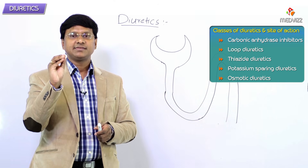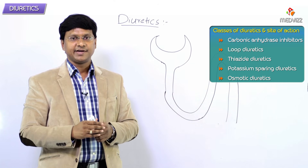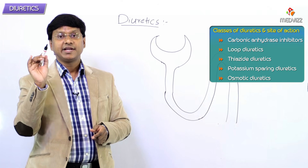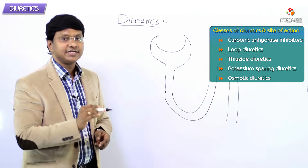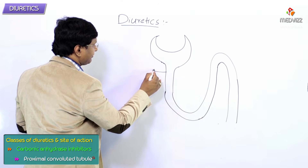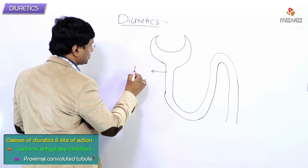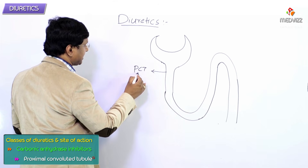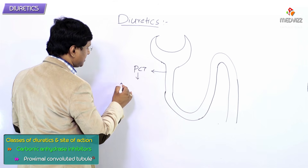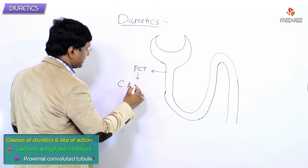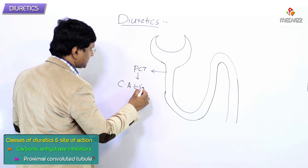Carbonic anhydrase inhibitors act at the level of the PCT — the proximal convoluted tubule. The drugs which act as carbonic anhydrase inhibitors act at this site.